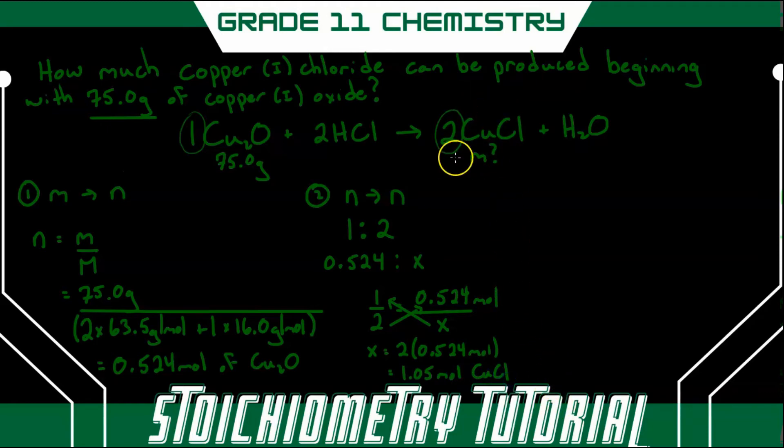So now that we know how many moles of copper chloride we have, our final step will be to go from the number of moles into mass. And we're going to use the same formula we did from step one. We're just simply going to rearrange it to give mass as the number of moles times the molar mass.